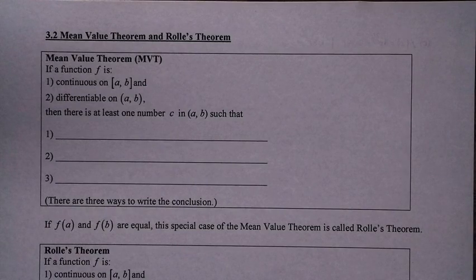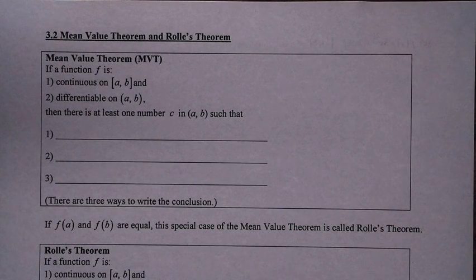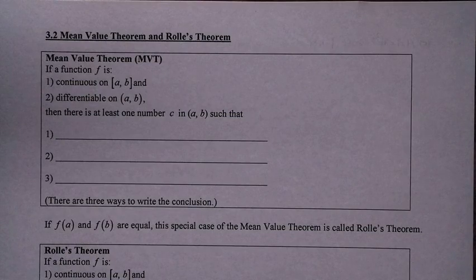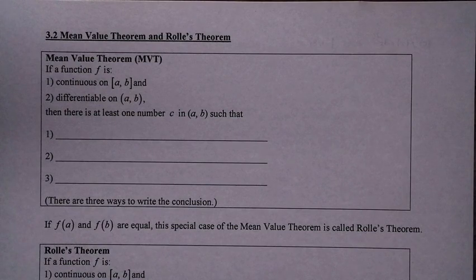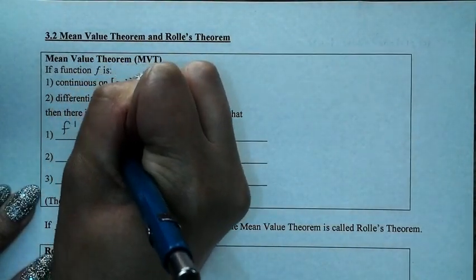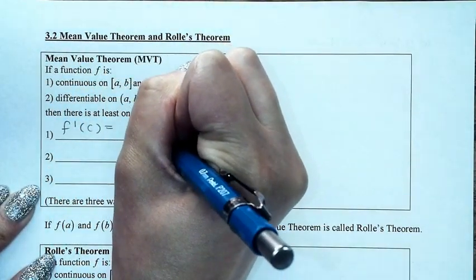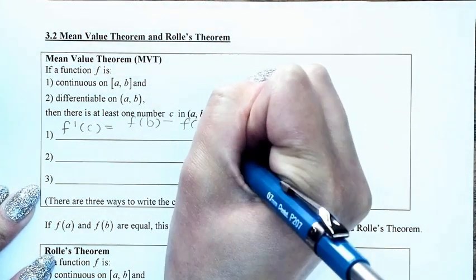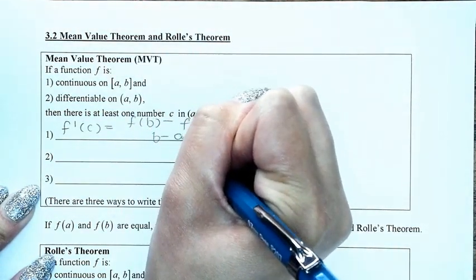Hi guys, today we are going to learn about the mean value theorem and Rolle's theorem. The mean value theorem tells you that if a function f is continuous on the closed interval [a,b] and differentiable on the interval (a,b), then there's at least one number c inside the interval (a,b) such that f prime of c is equal to f(b) minus f(a) divided by b minus a.